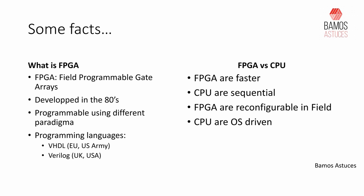FPGAs are reconfigurable in the field — I already explained this part. Another difference between CPU and FPGA is the fact that the CPU has to be driven by an operating system, meaning you have to program your CPU in C, more or less, in order to use the hardware behind it.